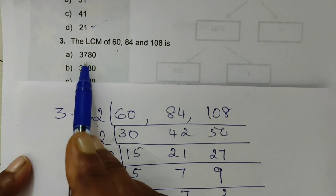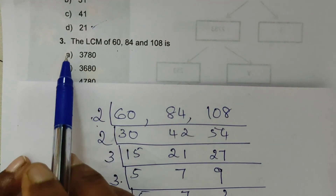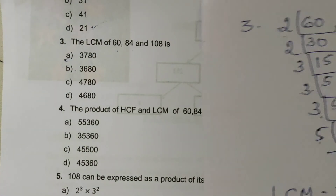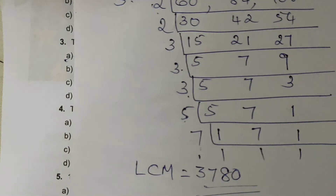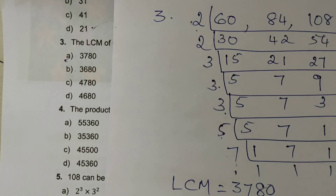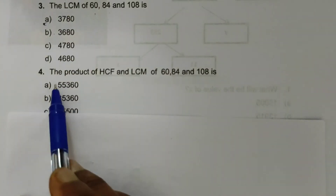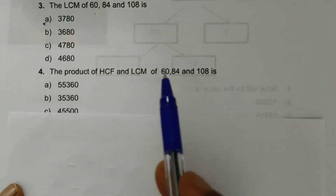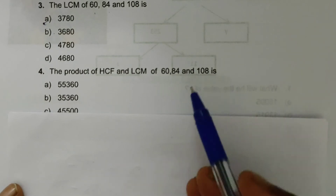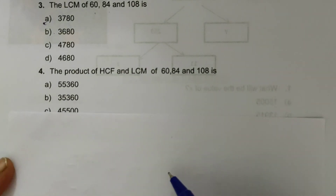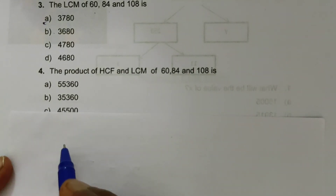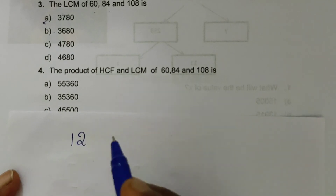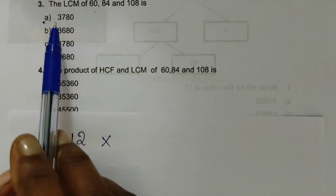The LCM is 3780, so the first option A is the correct answer. The fourth question asks for the product of HCF and LCM of 60, 84 and 108. We already found HCF is 12, so we calculate 12 into LCM.